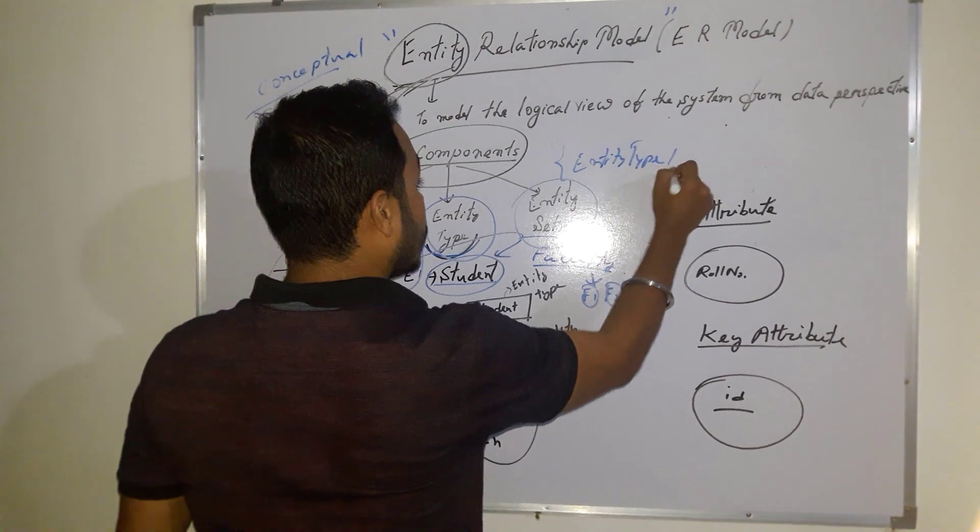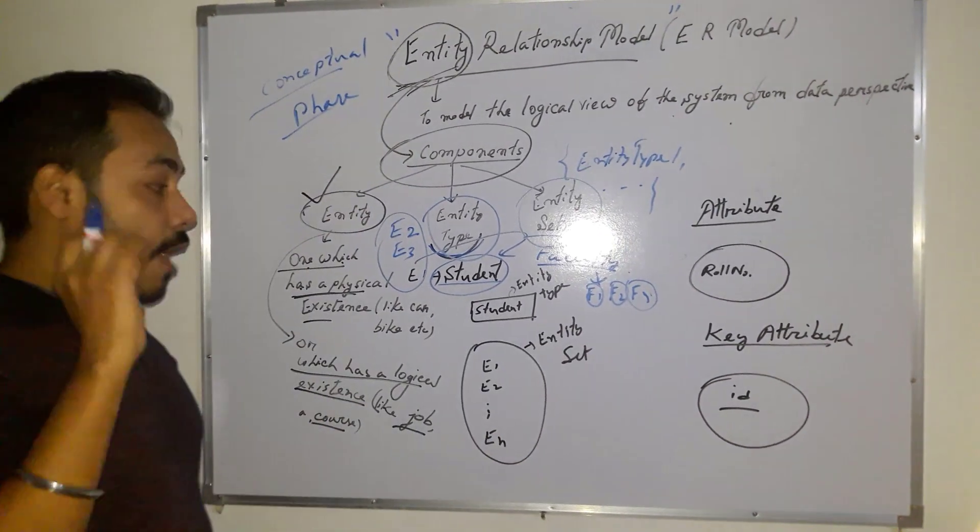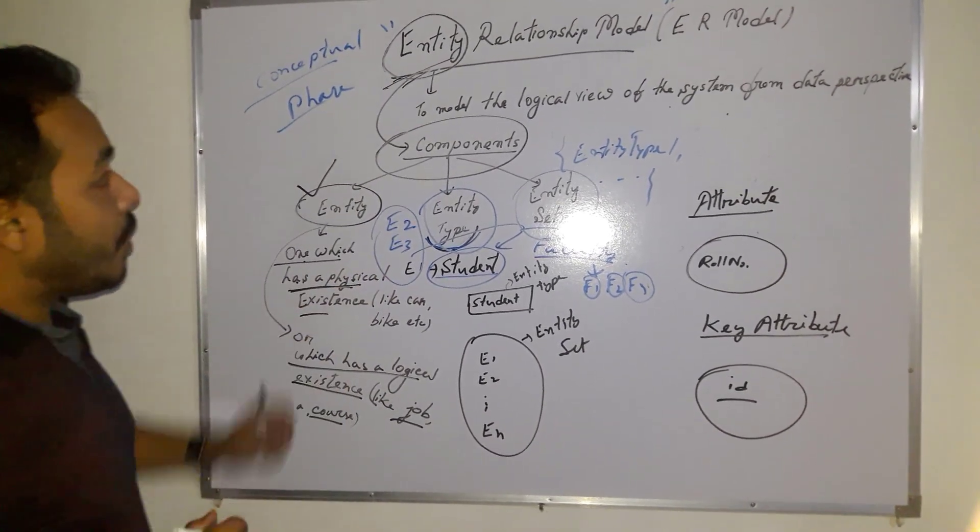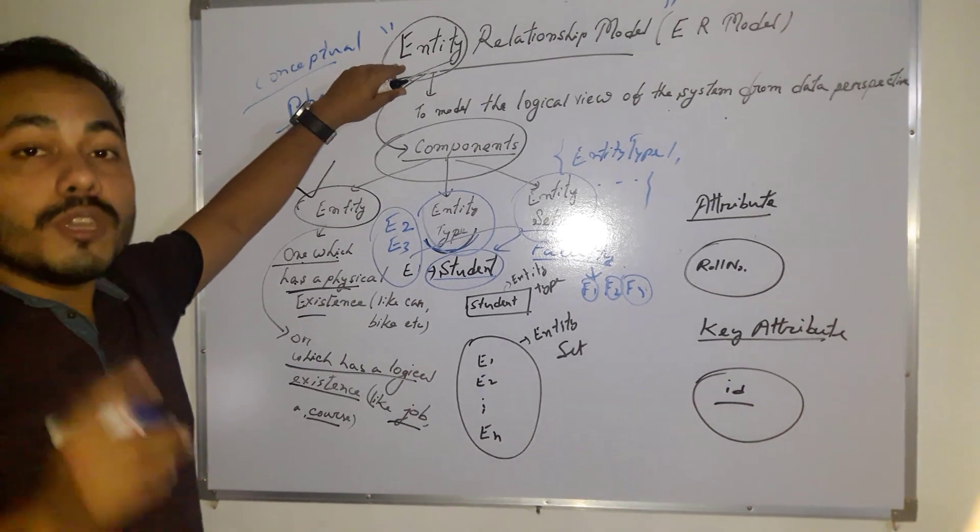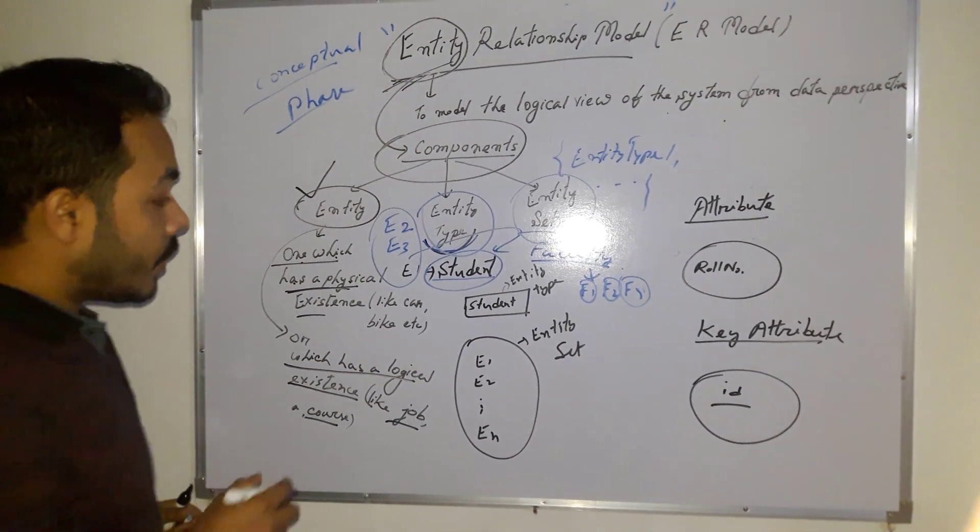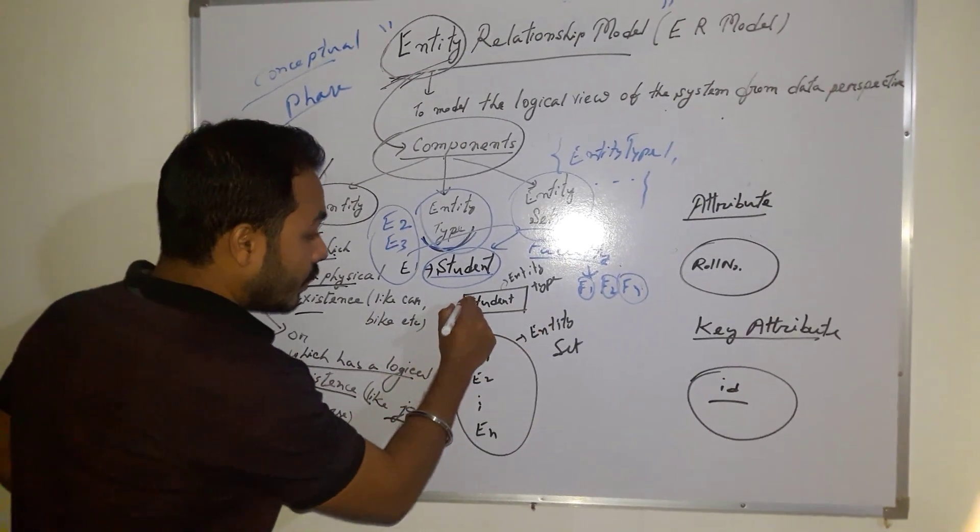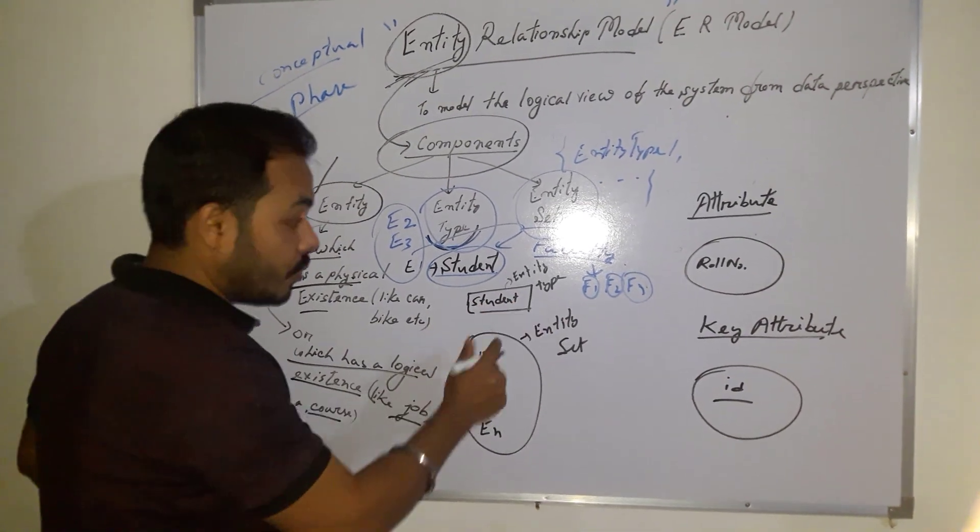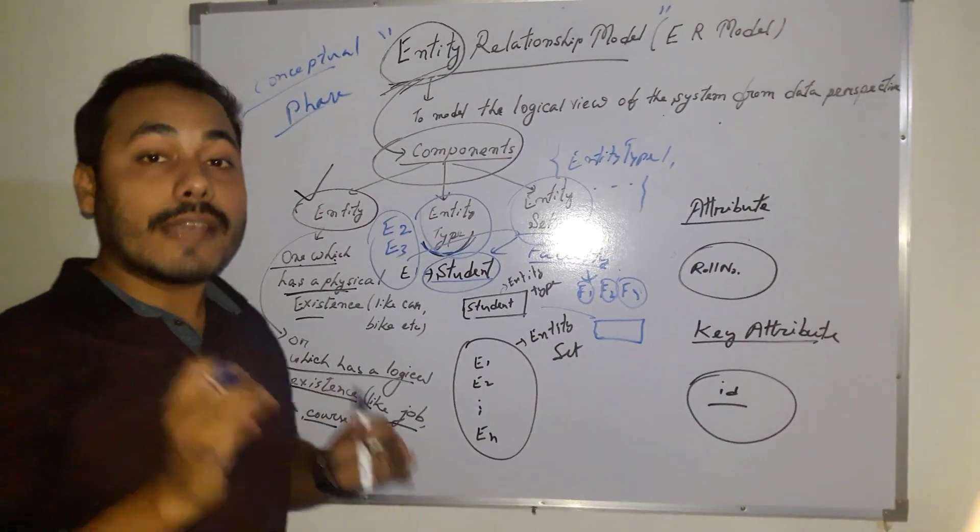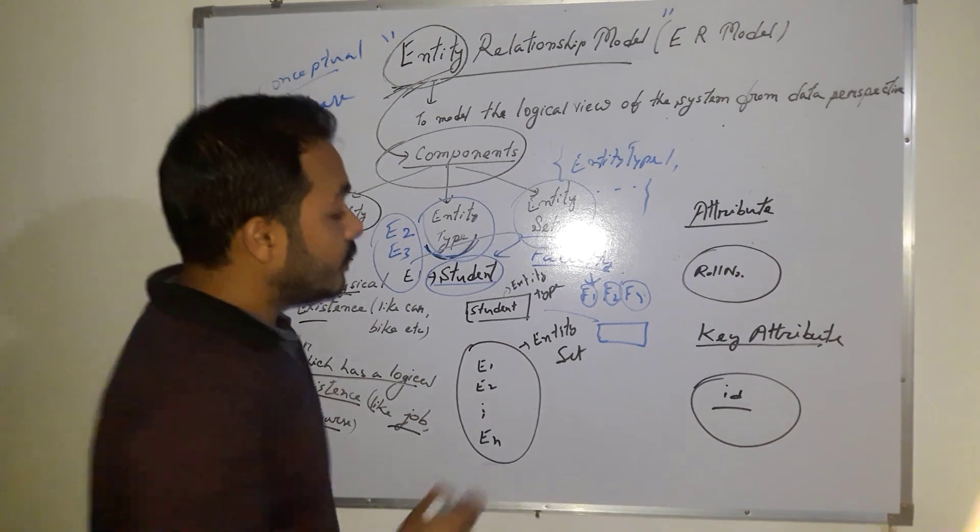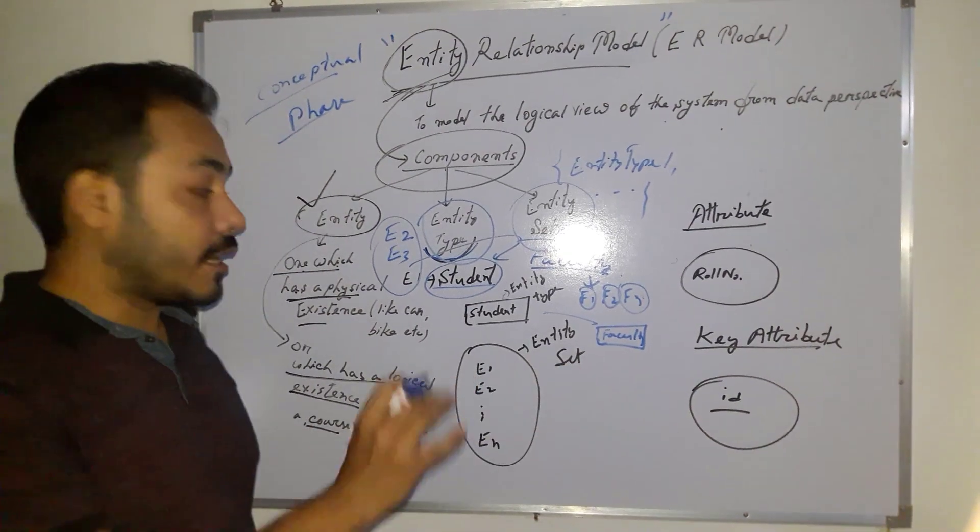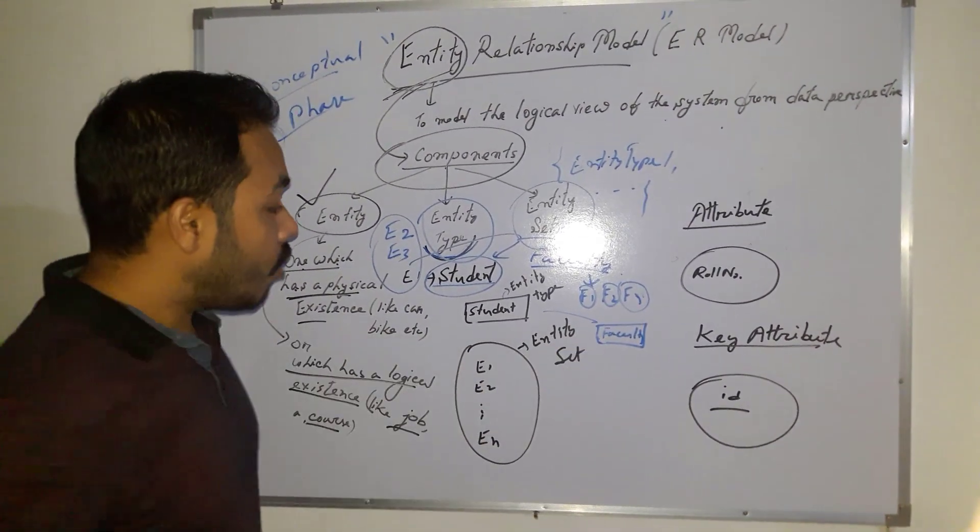So I'm considering one example. Here I have taken student. Now do remember that in ER model, we are following some standard symbols to represent those components. So to represent entity type, we use this rectangular symbol. Is this clear to you? Is this visible to you? You see, this symbol is used for denoting entity type. Suppose faculty - this is faculty. So this is an entity type representing faculty.